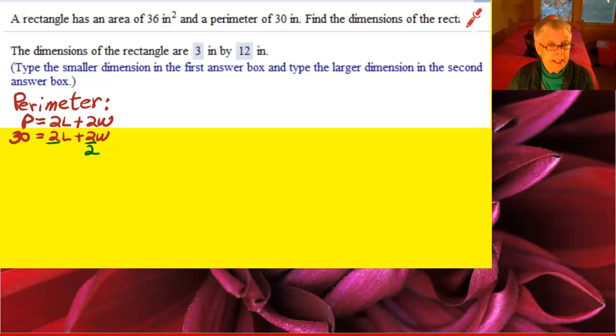Now notice that each number is divisible by 2, so I am going to divide by 2 to make my numbers smaller. That will give us 15 equals L plus W.